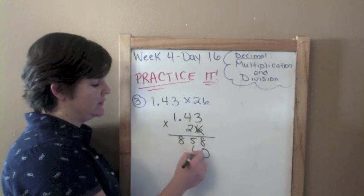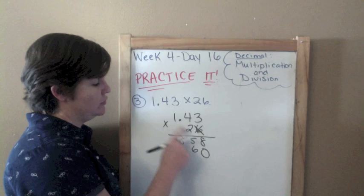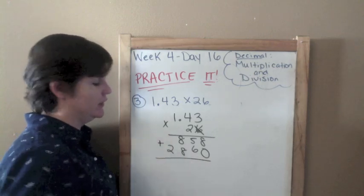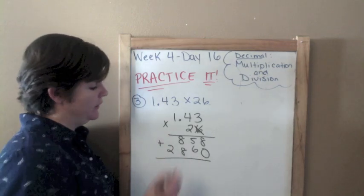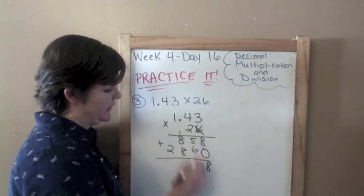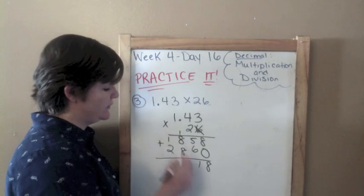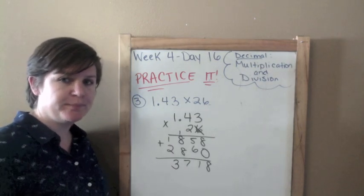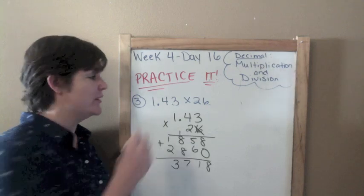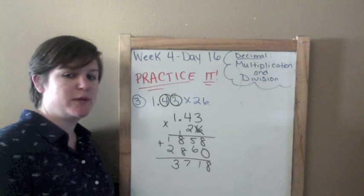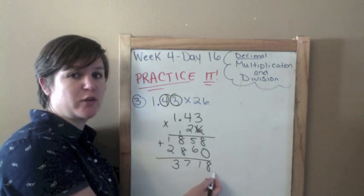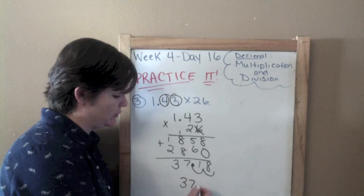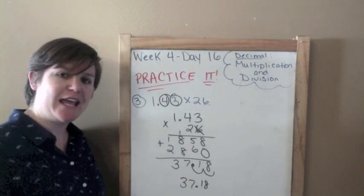2 times 3 is 6. 2 times 4 is 8. 2 times 1 is 2. You guys should be sharp right now with your multiplication. Very fluent at this point. If not, you need to find some kind of program to help you. Add them up. 8. 5 plus 6 is 11. 8 plus 8 is 16, plus 1 is 17. 1 plus 2 is 3. Now what is the rule when we have decimals and we are multiplying? You count the digits behind the decimal. I have two digits behind the decimal. So I start here. And how many jumps do I move inward? Two. One. Two. Put it there. And then I just like to rewrite it down below so it doesn't look so sloppy. There you go. 37 and 18 hundredths.